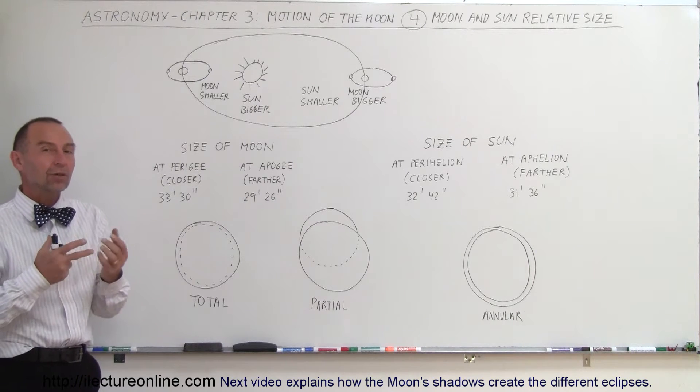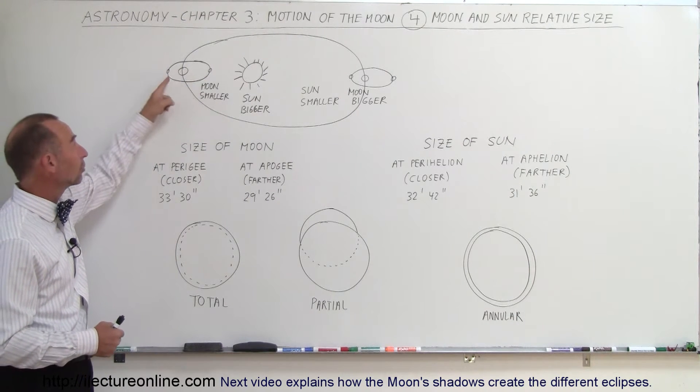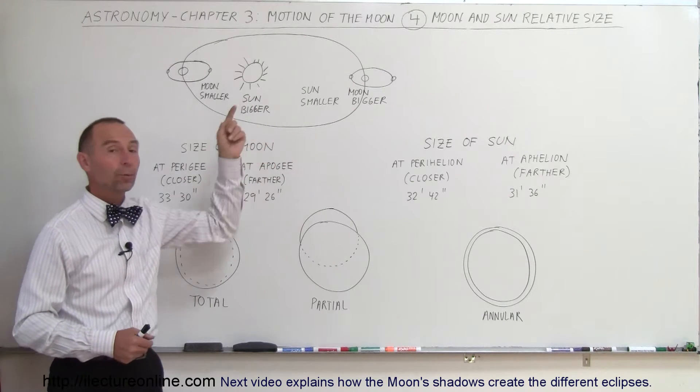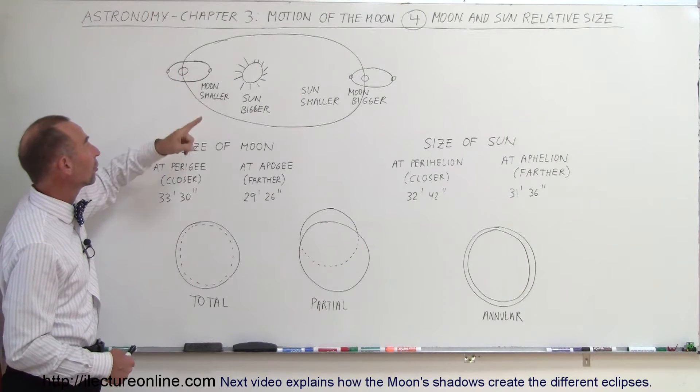Well, for one thing, why do they look different, why they look sometimes bigger and smaller is because both the Moon has an elliptical orbit and the Earth has an elliptical orbit around the Sun. So the Moon around the Earth, sometimes the Moon is closer to the Earth, sometimes it's farther away.